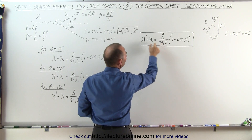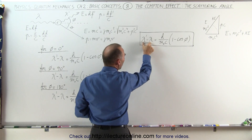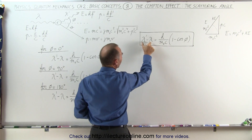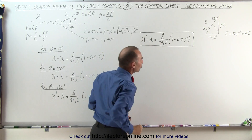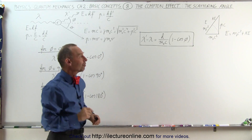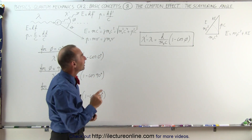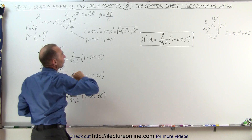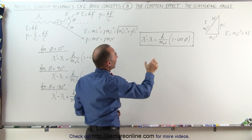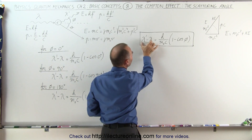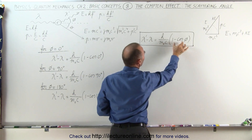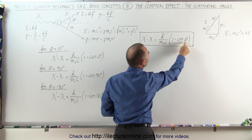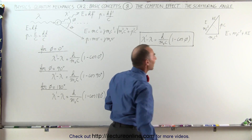The larger this particle, the smaller the change in the wavelength; the smaller this particle, the larger the change in the wavelength. But there's another factor: the scattering angle of the photon. You can see here that the difference in the wavelength is also a factor of one minus the cosine of that scattering angle.